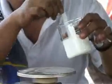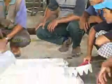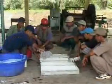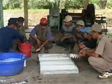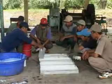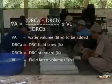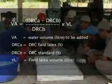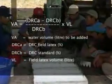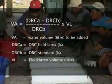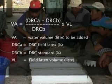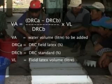The DRC content should be checked after filtering. The latex should be diluted by adding clean water to produce a standard mixture containing 12 to 15% DRC. The amount of water added can be calculated using the formula: VA equals DRCA minus DRCB over DRCB times VL — where VA equals the water volume in litres to be added, DRCA equals the DRC field latex percentage, DRCB equals the DRC standard percentage, and VL equals the field latex volume in litres.